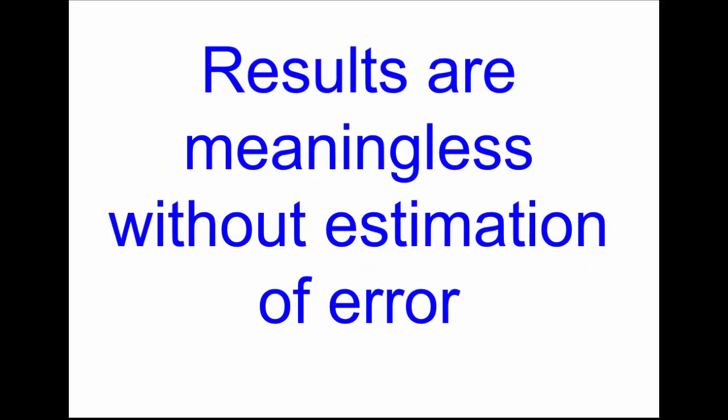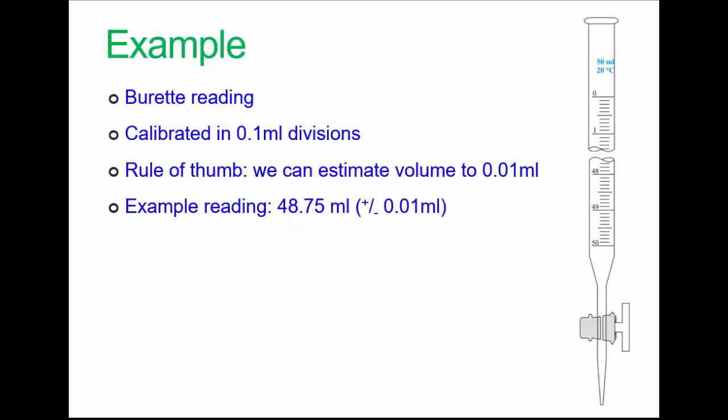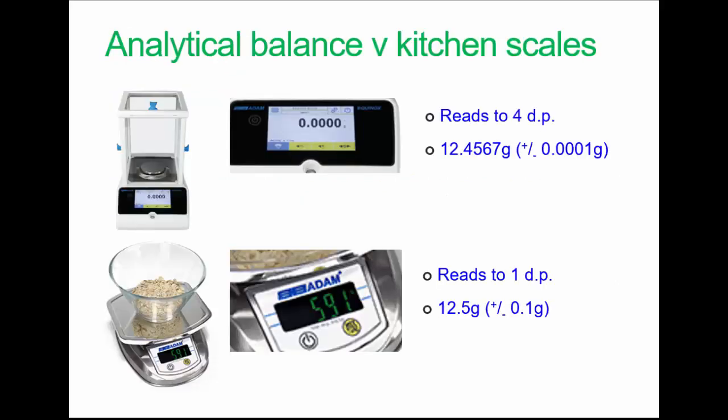Here's a key thing which is important when you're reporting results: results are meaningless without an estimation of error. Here's a burette. It's a 50 ml burette calibrated in 0.1 ml divisions. A good analyst can estimate the volume down to 0.01 mils. In practice, maybe 0.05 ml will be what most people could do. A good analyst would quote results as: my reading was 48.75 plus or minus 0.01 ml. How much this would be depends on the equipment. This can be very much higher or lower depending on the type of technique you're using.